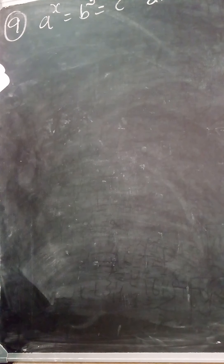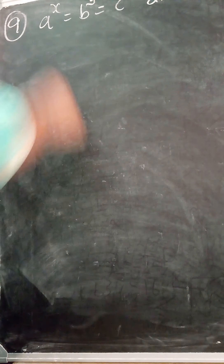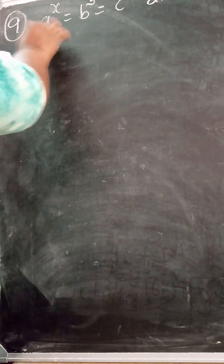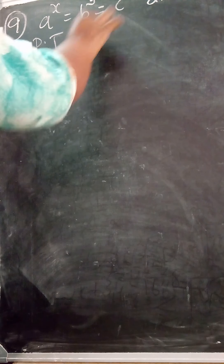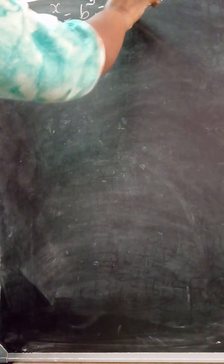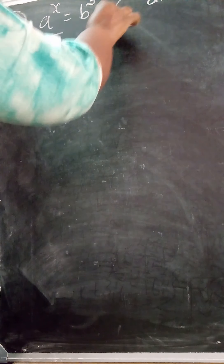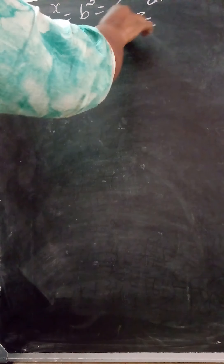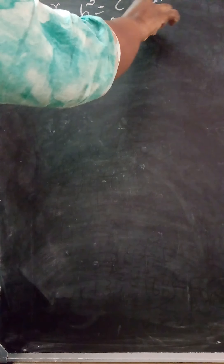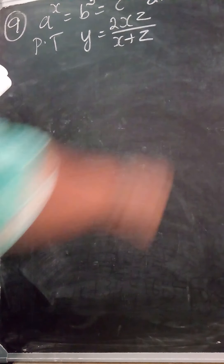And they have given b squared is equal to ac. We need to prove that y is equal to 2xz divided by x plus z.